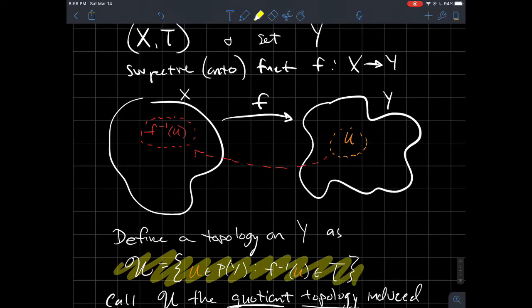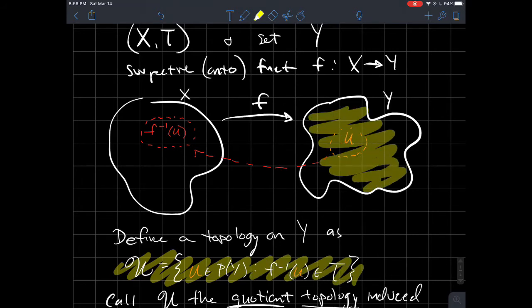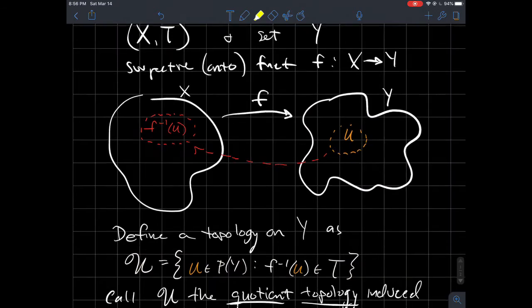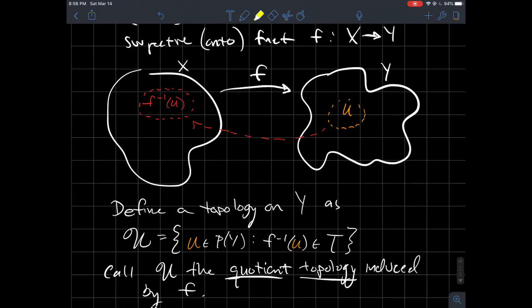What we're going to do is we're going to call that the quotient topology on Y. Again, this is one way we can put some fancy topology on Y here, and we'll call it the quotient topology induced by this function.